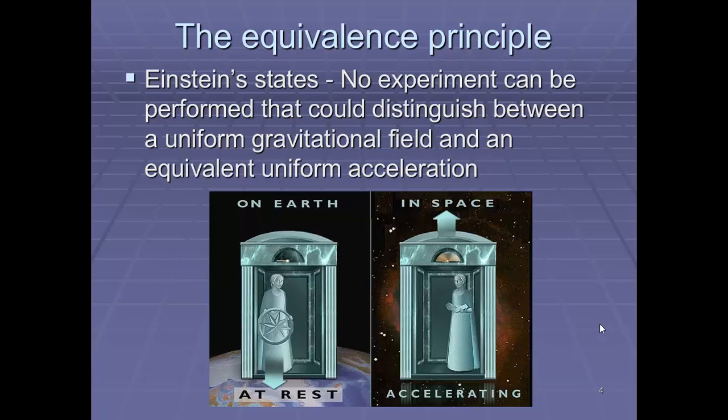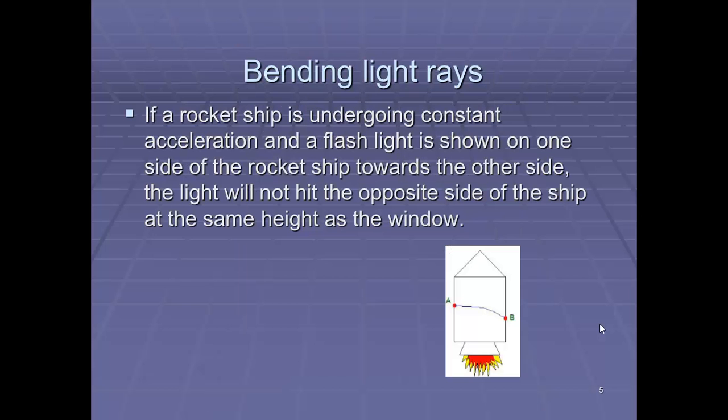Einstein states that no experiment can be performed that could distinguish between a uniform gravitational field and an equivalent uniform acceleration. This is always given as the example of if you were in a lift where you couldn't see outside. Would there be any experiment which would allow you to recognize or distinguish if you had a gravitational force pulling you downwards as on Earth or were you in fact accelerating in space? How could you tell the difference? That's the thing here. From these two general ideas, Einstein was able to start to bring things together.